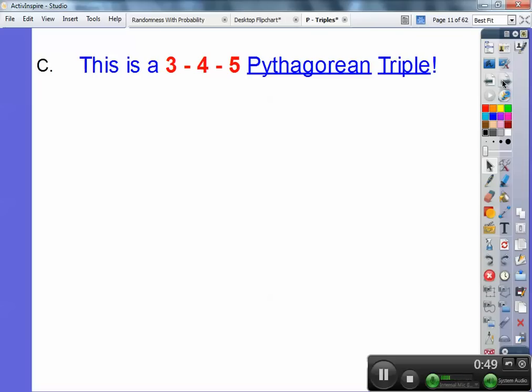And 3, 4, 5 is called a Pythagorean triple because it makes up a nice right triangle. And I'm going to call them P-triples from now on, just to save a little time.